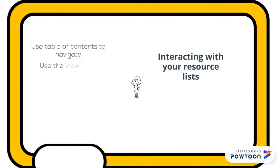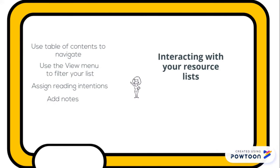Using the view menu, you can filter your lists by category such as online or essential reading. You may also want to add notes or assign a reading intention to individual items.